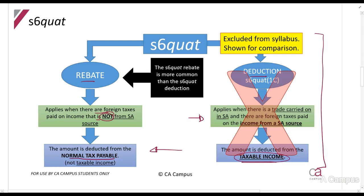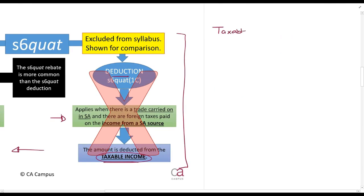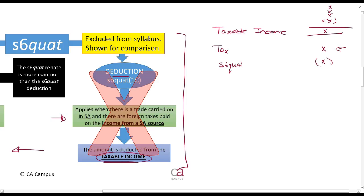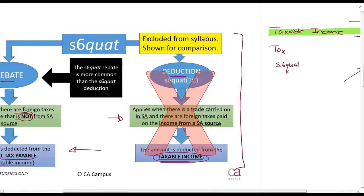Understand from the start that the Section 6quat rebate is a deduction against your normal tax payable, not your taxable income. You calculate taxable income as you have been doing, applying all inclusions and deductions. You then apply the tax rate to get normal tax payable, and only then do you deduct the Section 6quat rebate. A common student mistake is including the Section 6quat calculation in the taxable income calculation - you should stop at taxable income and only apply Section 6quat if asked for normal tax payable.